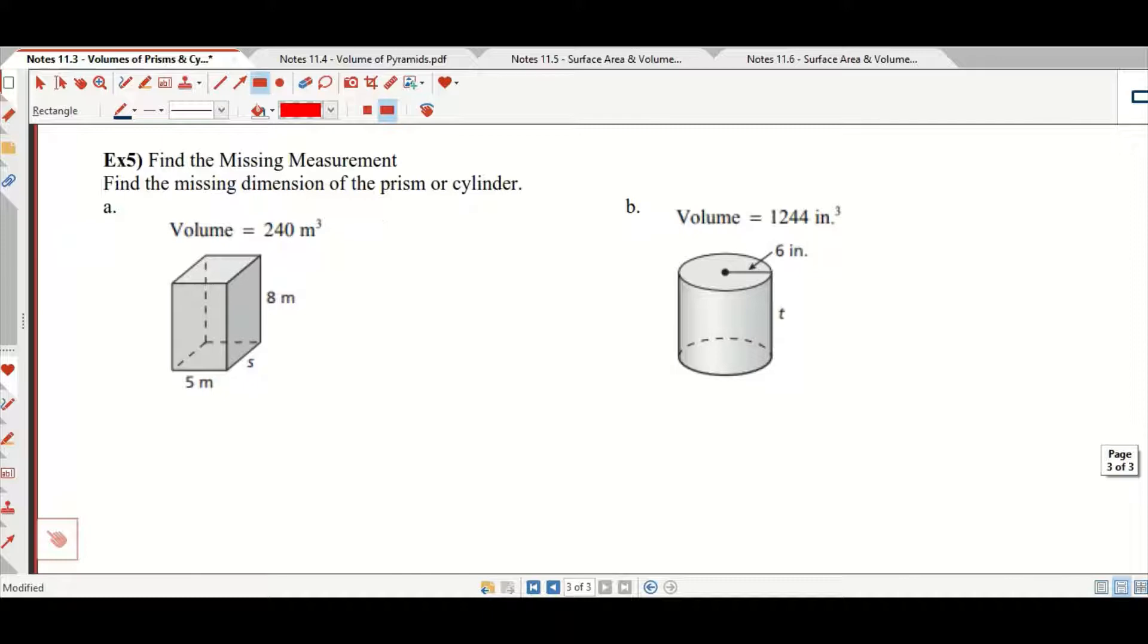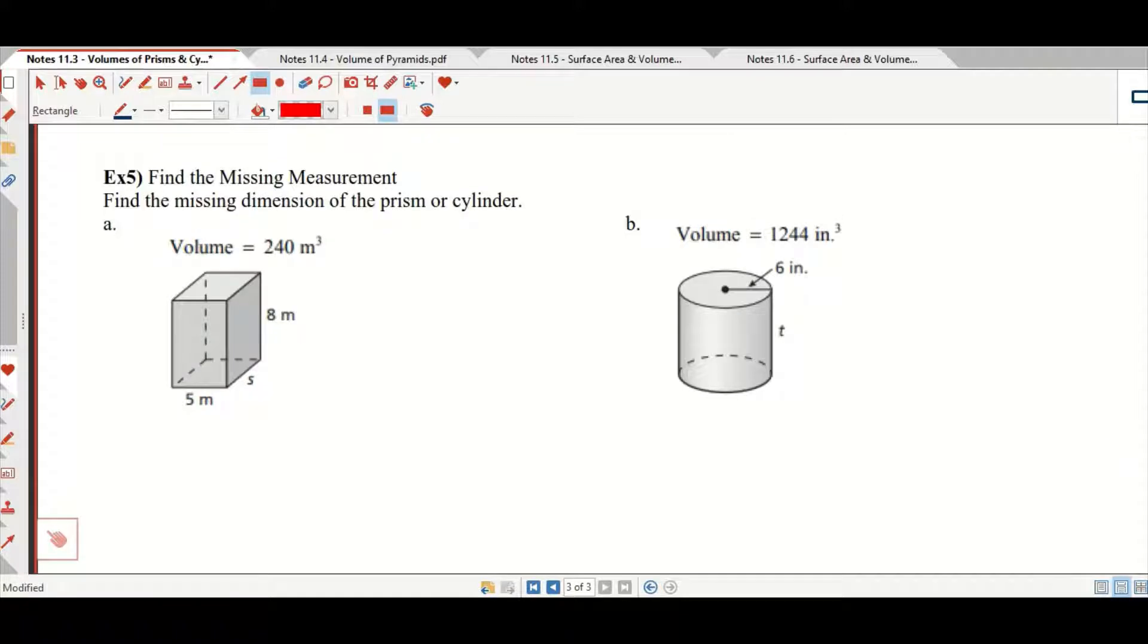Okay, find the missing measurement. Find the missing measurement of the prism or cylinder. So we know that in order to find the volume of this rectangular prism, you'd multiply all the sides. That is 8 meters times 5 meters times S is equal to 240 meters cubed, because that was the volume that was given.